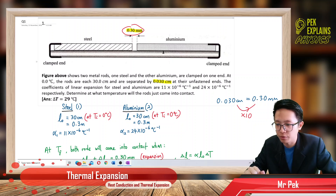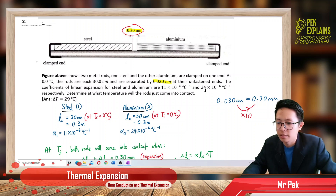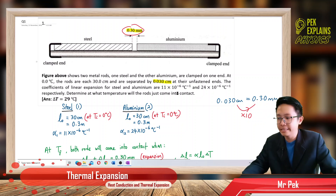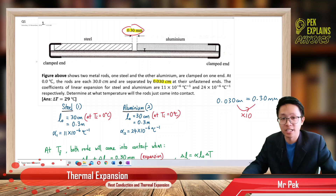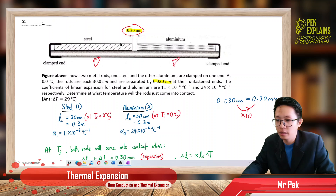The coefficient of linear expansion for steel and aluminium are 11 and 24, both with exponent negative 6 per degree Celsius. We need to determine at what temperature the rods will just come into contact. These rods will come into contact because they expand — they expand because they are being heated up.